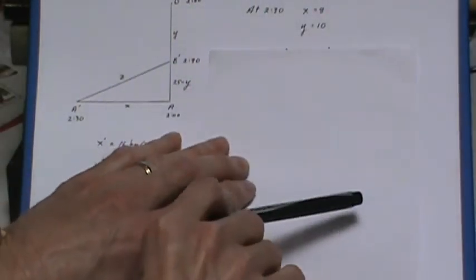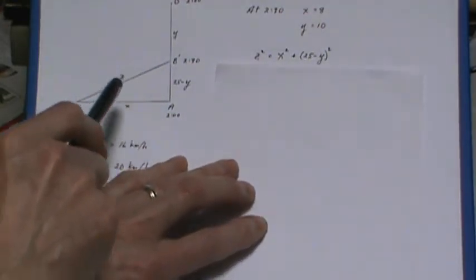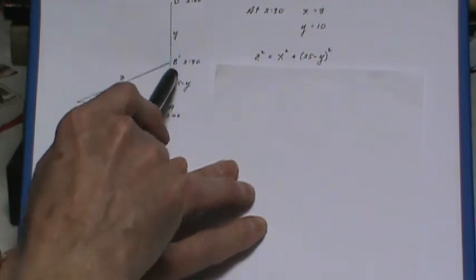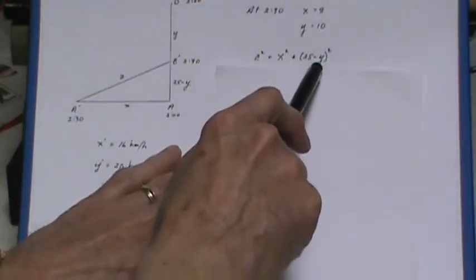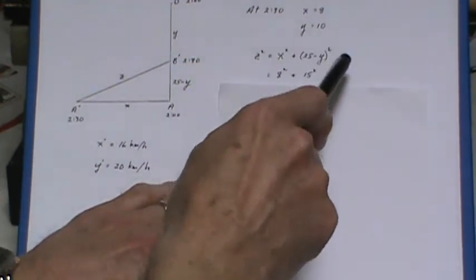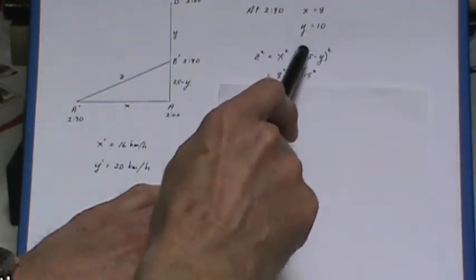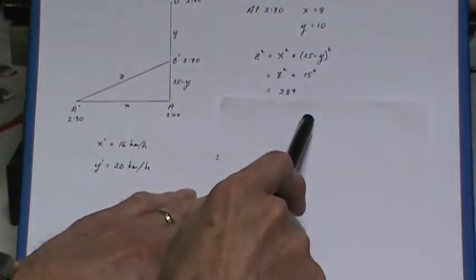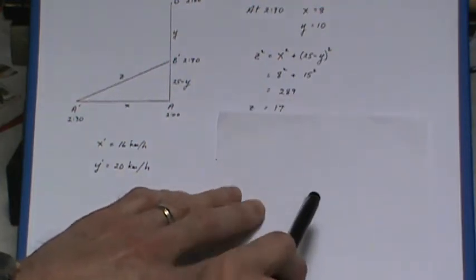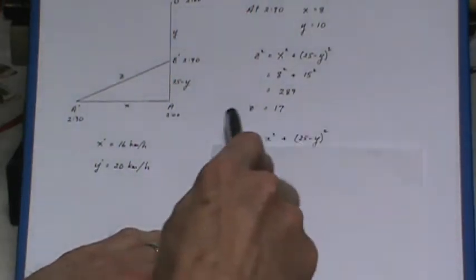And I'm going to set up the Pythagorean relationship: z² = x² + (25 - y)². I first of all put in the x and the y values, the x being 8 and the y being 10. That's how I got the 15 here to work out z. And what I'm getting ready for here is to take the derivative of this expression.